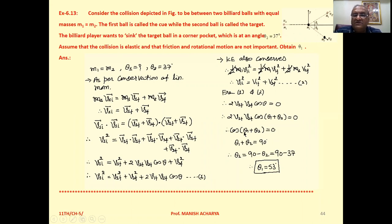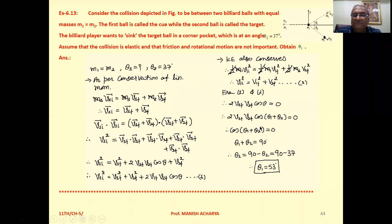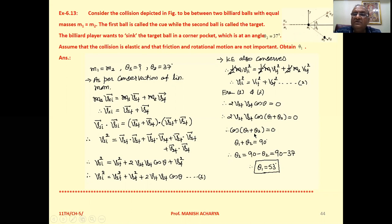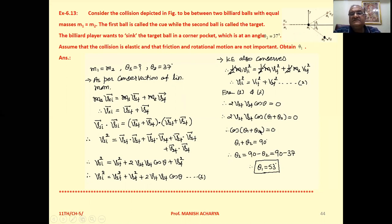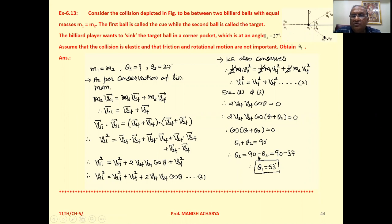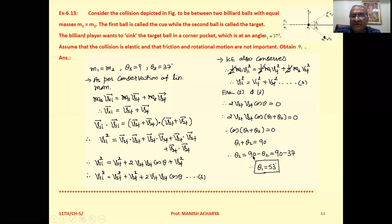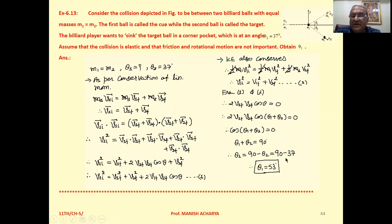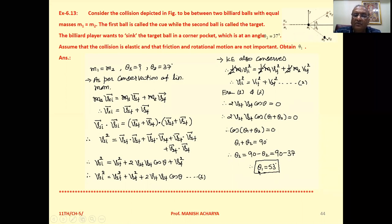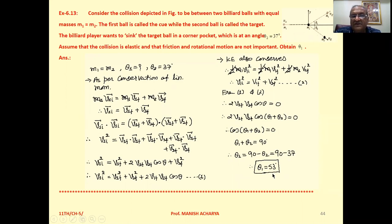When cos(theta 1 plus theta 2) equals 0, we need theta 1 plus theta 2 equal to 90 degrees, since cos 90° is 0. Therefore theta 1 equals 90 minus theta 2. Since theta 2 is given as 37 degrees, substituting gives theta 1 equal to 90 minus 37, so theta 1 equals 53 degrees.